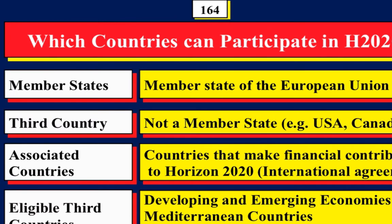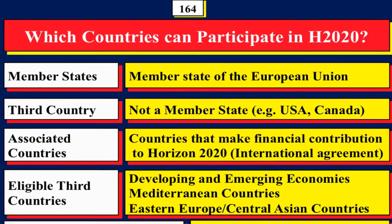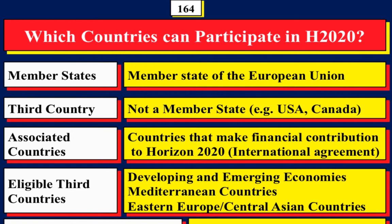A member state is a member of the European Union. A third country is European terminology for a country that is not a member of the European Union — for example, America and Canada are third countries. An associated country is a country that puts funding into Horizon 2020. Norway and Iceland put money in and participate as if they are part of the European Union.